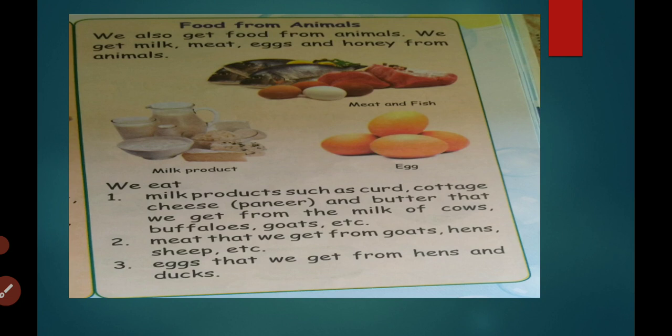Milk products such as curd, cottage cheese, butter — we get these from the milk of cows, buffaloes, and goats. Meat that we get from goats, hens, and sheep. Eggs that we get from hens and ducks.